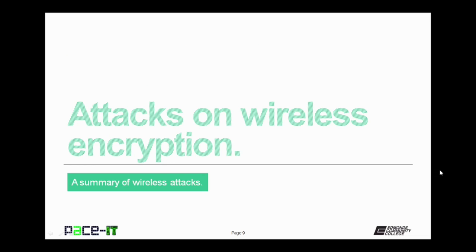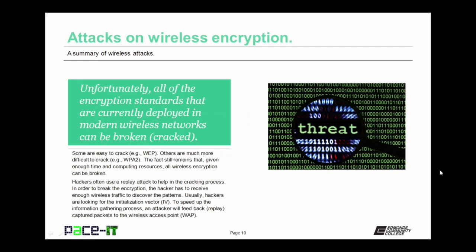It's time to move on to attacks on wireless encryption. Unfortunately, all of the encryption standards currently deployed in modern wireless networks can be broken. Some are easy to crack, such as WEP; others are much more difficult to crack, such as WPA2. The fact still remains that given enough time and computing resources, all wireless encryption can be broken. One method that hackers use to speed up the encryption cracking process is to use a replay attack.